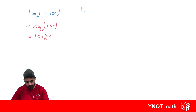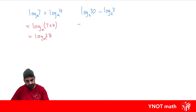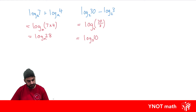What about log 30 base 2 minus log 3 base 2? The difference of logs is the log of a quotient. So we're going to get log of 30 divided by 3, with base 2. And 30 divided by 3 gives us log 10 base 2.